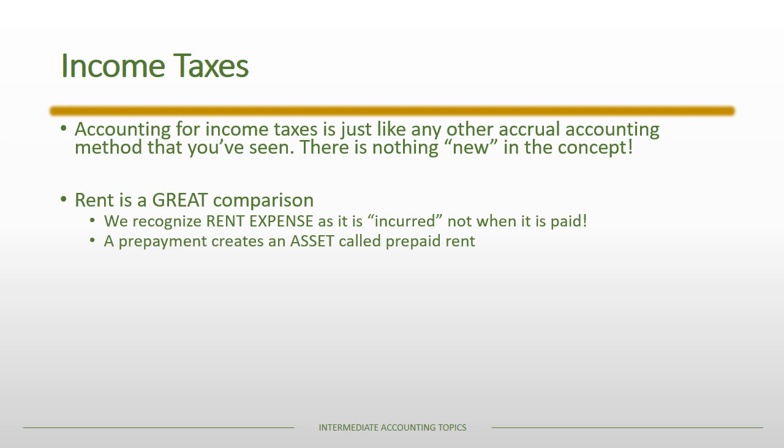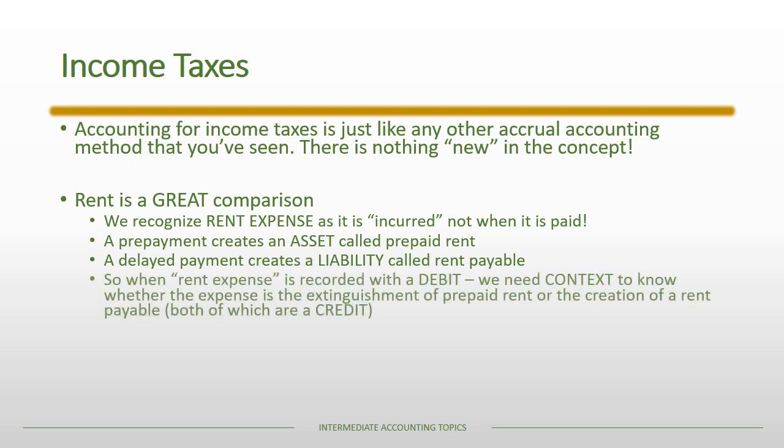If there is a prepayment on rent, it would be an asset and we'd call that prepaid rent. If there's a delayed payment, that would create a liability and we'd call that rent payable. When you have rent expense — a debit — you need context to know whether it extinguishes prepaid rent or creates rent payable, or potentially a combination of both, as the offsetting credit.